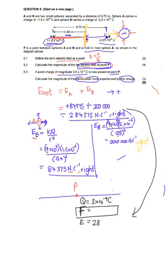It's 284.375 newtons per coulomb. So we can use our equation from the data sheet which says that the electric field is equal to the force per coulomb of charge. I'm going to substitute 284.375 is equal to F over 3 times 10 to the minus 9.